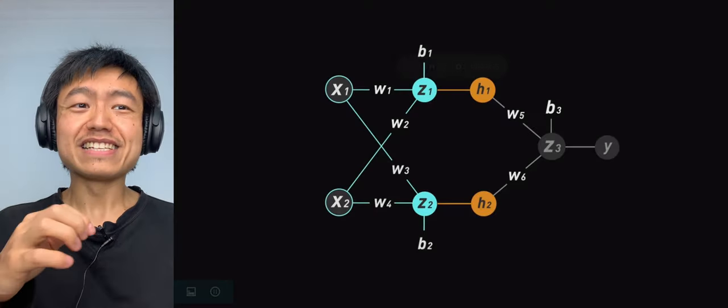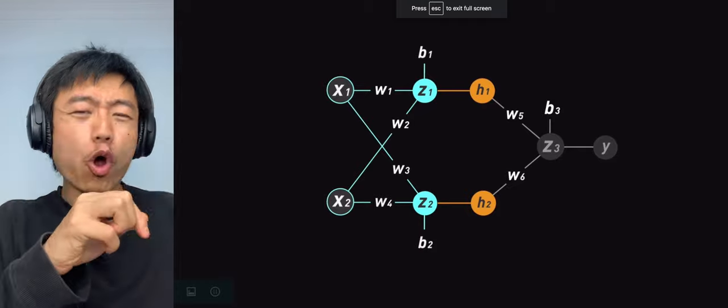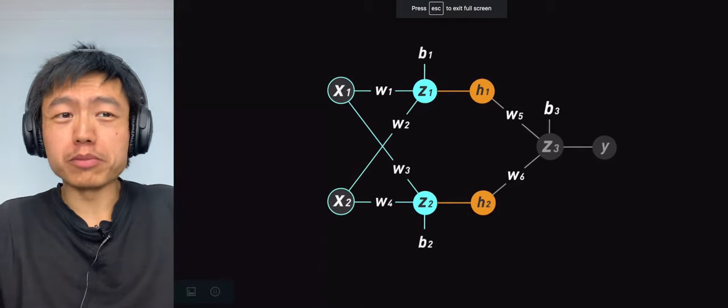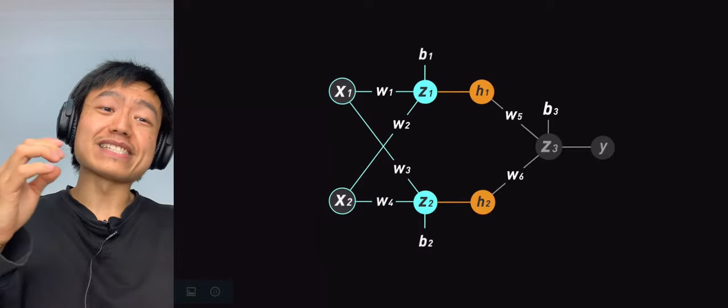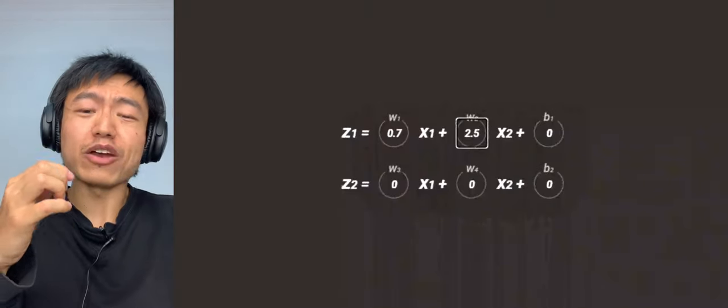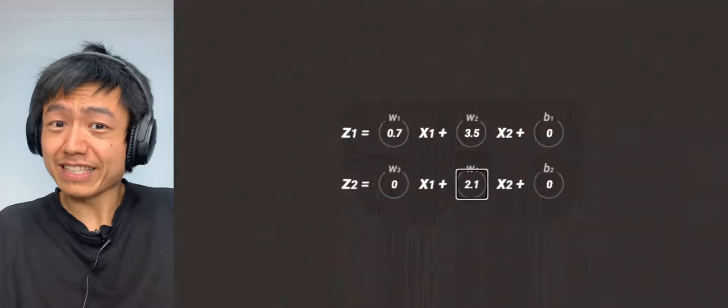In theory, the neural network structure I have built now can handle all the classic classification problems. As long as it constantly adjusts values of W and B, it can separate these two types of data.